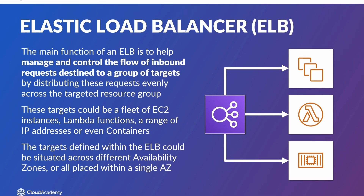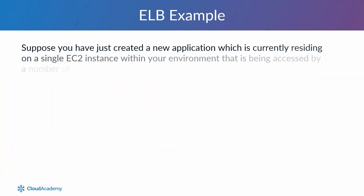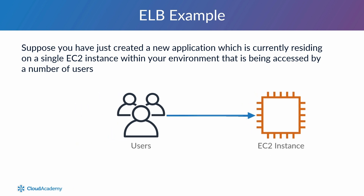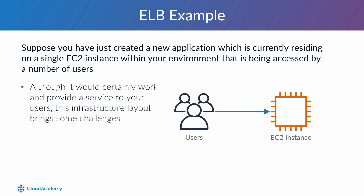Let's look at this from a typical scenario. Suppose you have just created a new application which is currently residing on a single EC2 instance within your environment and this is being accessed by a number of users. At this stage, your architecture can be logically summarised as shown. If you are familiar with architectural design and best practices, then you would realise that using a single instance approach isn't ideal, although it would certainly work and provide a service to your users.